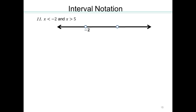For x smaller than negative 2 AND x bigger than 5: here's negative 2, here's 5. You want simultaneously smaller than negative 2 and bigger than 5 — that's not going to happen. You can't be in both places at the same time, so there's no solution.